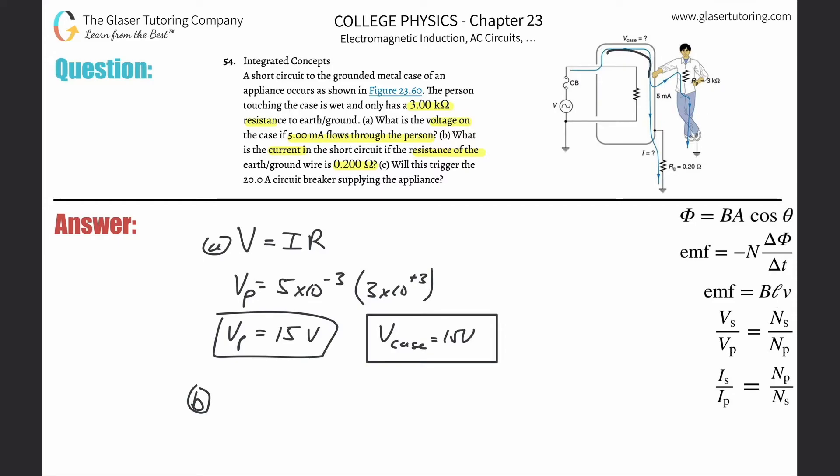The current flowing through this person will not be constant as the total current that is flowing through the case, because as the current comes to this point of bifurcation, some of it goes that way, some of it goes this way. So we know that the sum of those two points, this and this, would be equal to the total that comes in. That's junction rule, we remember all this stuff.